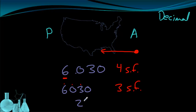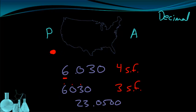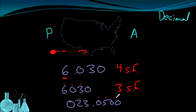Let's do one more example: 023.0500. The decimal is present, so I start on the left side, looking for the first non-zero digit going right. Starting from the left, the first digit is a zero — I ignore it. The next one is a 2, so now I start counting: one, two, three, four, five, six. This has six significant figures. This method is very useful for quickly finding the number of significant figures in any measurement.